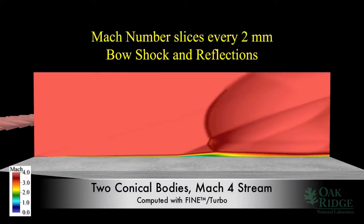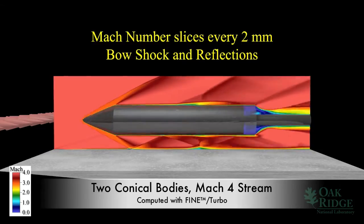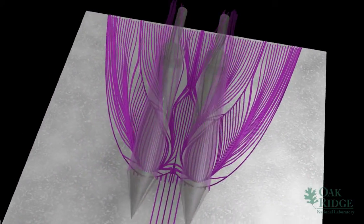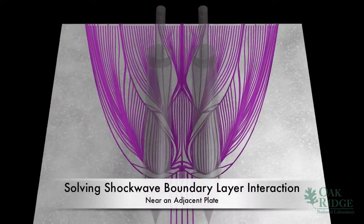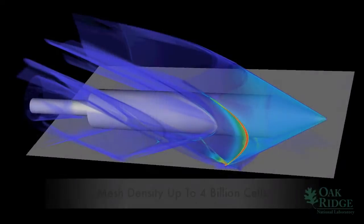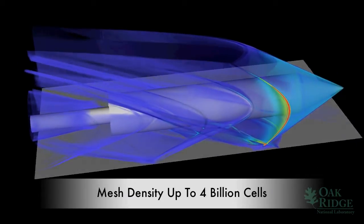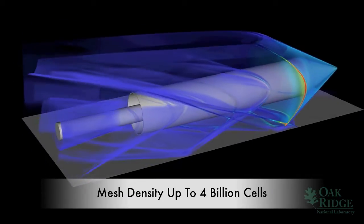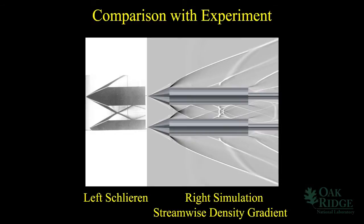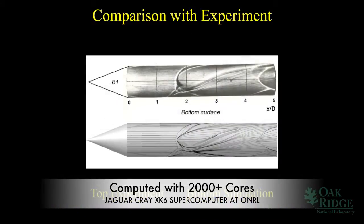This is an example of a massive HPC-scale problem. The model includes two conical bodies exposed to a Mach 4 stream adjacent to a flat plate. The objective of the study is to resolve the shockwave boundary layer interaction. The flow model has been meshed with up to 4 billion cells and solved on thousands of cores using the Jaguar Cray XK6 supercomputer at the Oak Ridge National Lab.